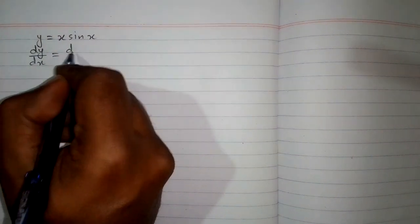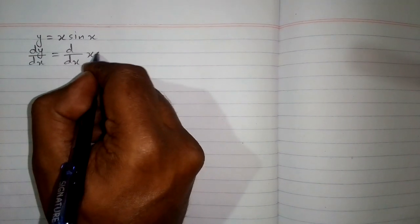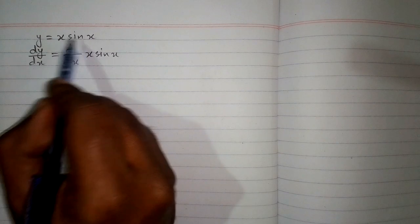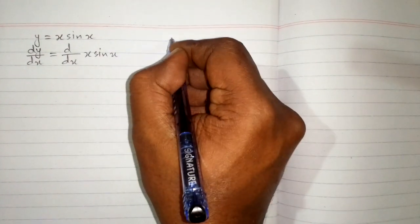So we have dy/dx equals d/dx of x times sin x. Now we can see this is the product of two functions, x and sin x, so we will apply the product rule of differentiation.